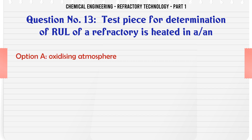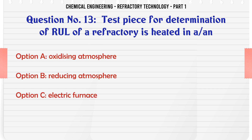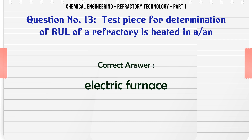Test piece for determination of RUL of a refractory is heated in: A. Oxidizing atmosphere, B. Reducing atmosphere, C. Electric furnace, D. Neutral atmosphere. The correct answer is Electric furnace.